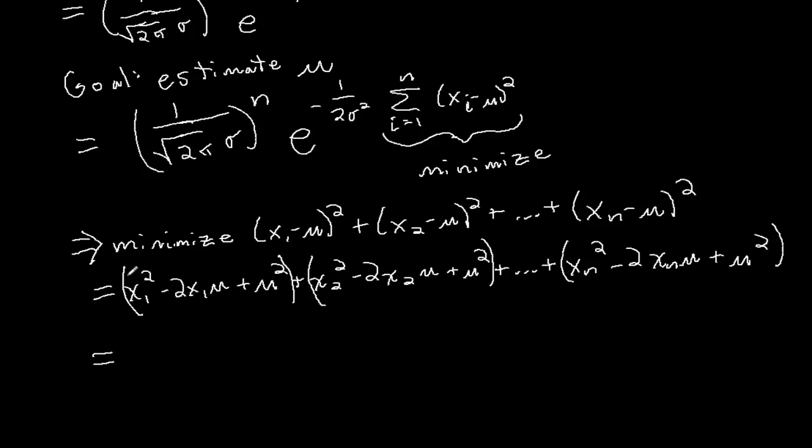All right, well, now I'm going to put my mu squared terms together. So I have mu squared, mu squared, and mu squared shows up in each of these n terms, so I have n times mu squared. And now, how about mu? What do I have times mu? I have a minus 2x1, a minus 2x2, all the way up to minus 2xn. So this is minus 2 times x1 plus x2 plus all the way up to xn times mu. And then finally I have x1 squared plus x2 squared all the way up to xn squared.